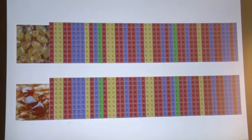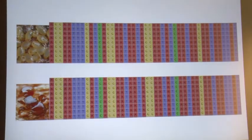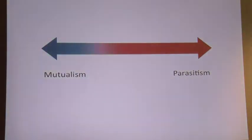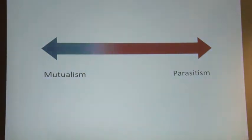Even without honeydew, this interaction can be a stable mutualism — the scales are still getting a good benefit from associating with the ants, even though they're getting eaten. This is what I find really fascinating about this system and the jumping-off point for future work: trying to figure out how does this relationship work? How does it fit in the conceptual spectrum from mutualism to parasitism?